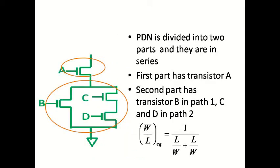Since the two paths have different numbers of transistors, we divide the pull-down network into two parts. Transistor with input A is common to both paths and forms one part. The other part consists of two sub-paths: one with B and another with C and D. We divide the total effective W by L ratio of the NMOS devices between the two paths.